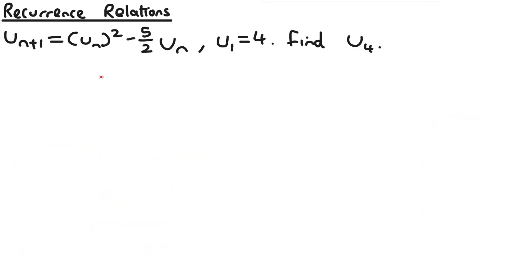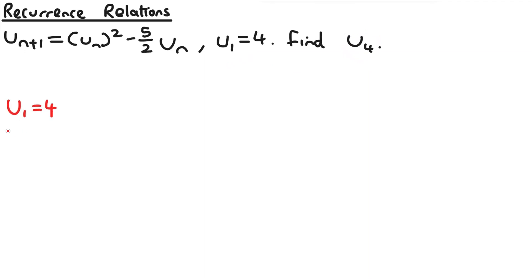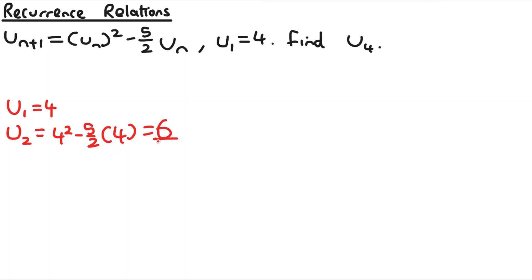Here's an example question where u(n+1) is defined as (u_n² − 5)/(2u_n), with the first term u1 = 4 given, and we need to find u4. So u2 = (4² − 5)/(2×4) = (16 − 5)/8 = 11/8... actually putting that into a calculator gives 6. So the sequence starts 4, 6.